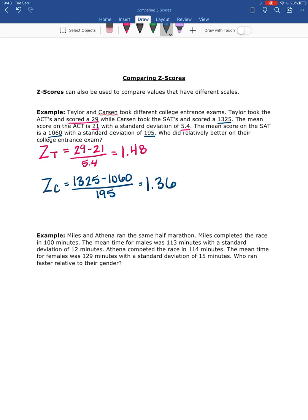So now, if I were to draw a bell curve, assuming these are bell shaped, and they should be with us calculating Z-scores, the middle is going to be 0. The mean has a Z-score of 0. So Taylor is over here at 1.48, and Carson is at 1.36. So Taylor has a higher Z-score, meaning she has a higher relative score, so she did better on her entrance exam.